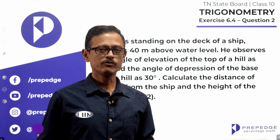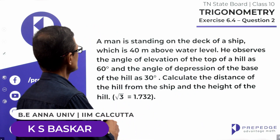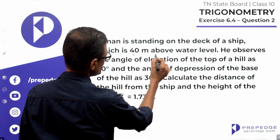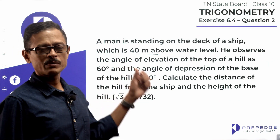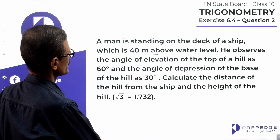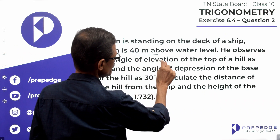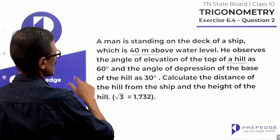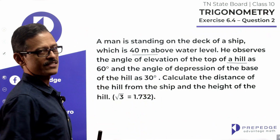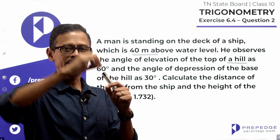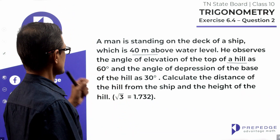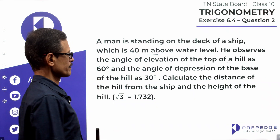In the Trigonometry chapter, Exercise 6.4, Question 2: A man is standing on the deck of a ship which is 40 meters above water level. He observes the angle of elevation of the top of a hill as 60 degrees, and the angle of depression of the base of the hill as 30 degrees.